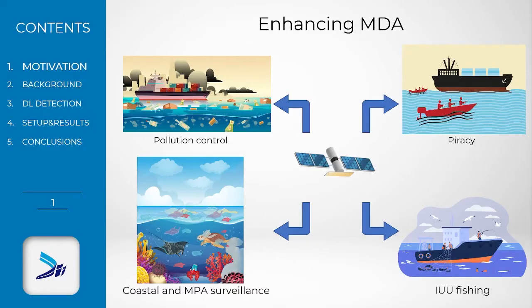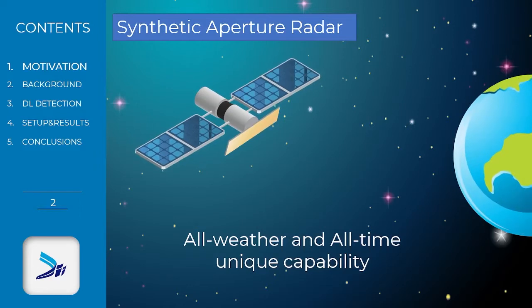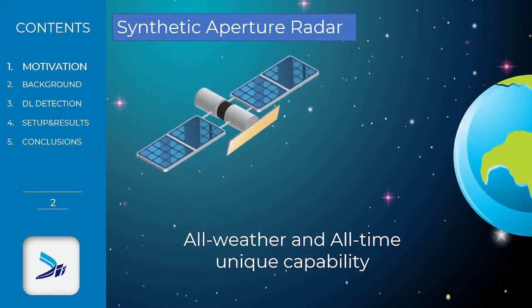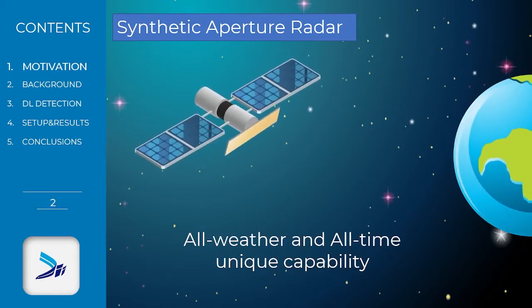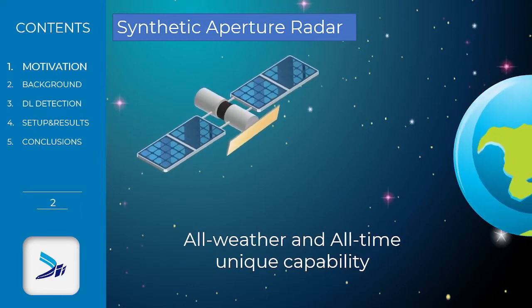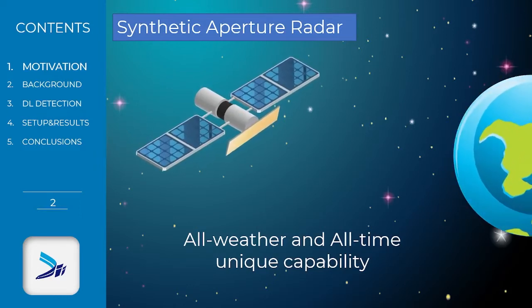To counter large drift at sea, satellite technologies are a key solution, providing wide area mapping at fixed time intervals. Among multi- and hyperspectral sensors, synthetic aperture radar is a top choice for its all-weather and all-time capabilities.